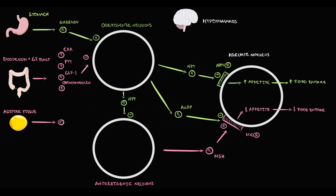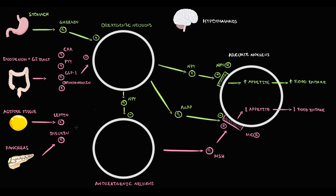The last two peripheral substances are leptin and insulin. Leptin is produced by adipose tissue, and insulin is produced by the pancreas. Leptin reflects long-term energy storage, because the higher the amount of fat tissue, the higher the production of leptin — and accumulating fat tissue takes a long time. In contrast, insulin reflects short-term energy storage, as it is produced in response to meal intake. Both leptin and insulin stimulate anorexigenic neurons and inhibit orexigenic neurons.